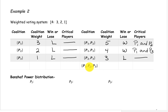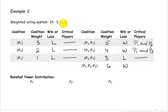The coalition containing all the players has a weight of 3 plus 2 plus 1, which is 6. This is a winning coalition. If we were to remove player 3, the weight would be 3 plus 2, or 5 — still winning, so player 3 is not critical. If we were to remove player 2, the weight goes down to 3 plus 1, or 4 — still a winning coalition, so player 2 is not critical. If we were to remove player 1, the weight drops down to 2 plus 1, or 3, causing it to lose, so player 1 is critical.